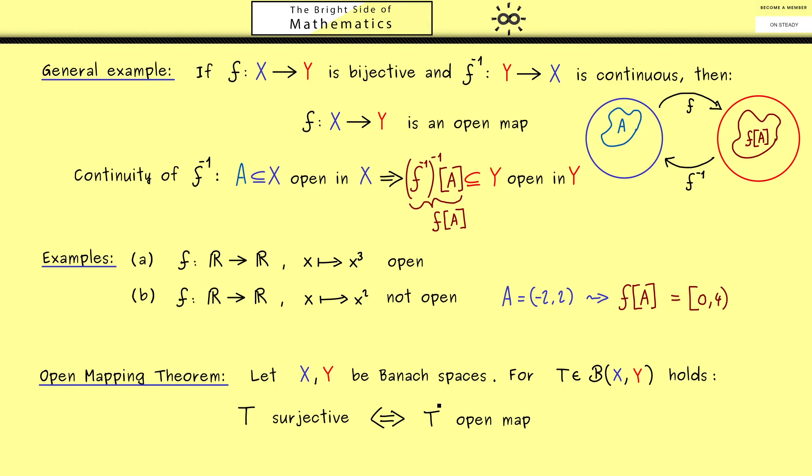Indeed, the implication from right to left is not so surprising and easy to prove. The actual work one has to do from the left to the right-hand side. Therefore, the proof of the first implication is a good exercise for you. But for the other one, we need a whole other video.